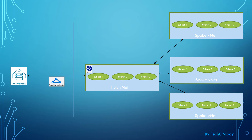If you want to enable communication from the spokes to on-premises, you need to enable the transit gateway at the hub level, and then allow the remote gateway at each spoke level. Once these two things are done, communication flows from spoke to on-prem. ExpressRoute by itself only sets up the connection from the hub to on-premises. To allow spoke VMs to talk to on-prem resources, you must enable remote gateway on all spoke VNets and enable gateway transit on the hub VNet.